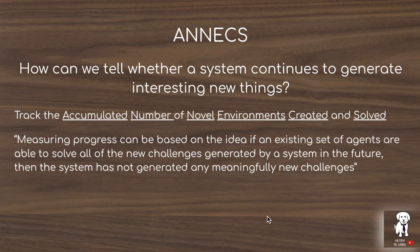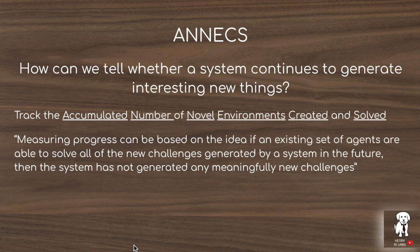The next key distinction is the ANNEX metric — an automated quantitative metric for assessing how these systems continue to generate interesting new things in quality diversity algorithms. The idea is to track the accumulated number of novel environments created and solved, based on the intuition that if an existing set of agents can solve all new challenges generated by a system in the future, the system is not generating any meaningfully new challenges. This simultaneously measures how diverse these environments are and how well the agents can then adapt to solve these new environments.